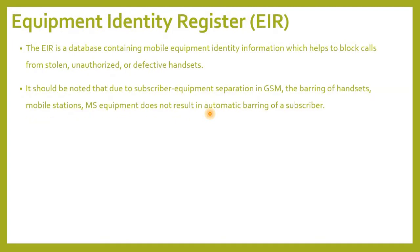The Equipment Identity Register (EIR) is a database containing mobile equipment identity information, which helps to block calls from stolen, unauthorized, or defective handsets. It should be noted that due to subscriber-equipment separation in GSM, the barring of handsets or mobile stations (MS equipment) does not result in automatic barring of a subscriber.